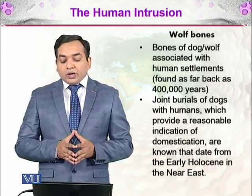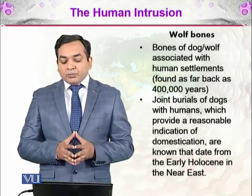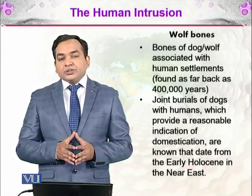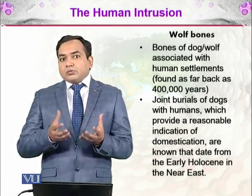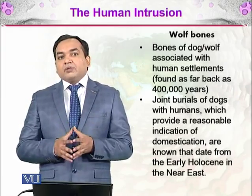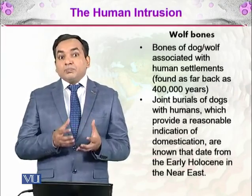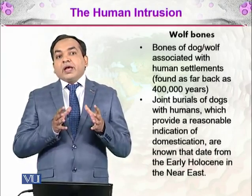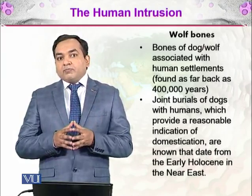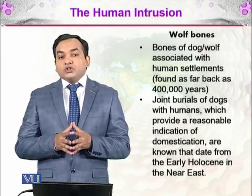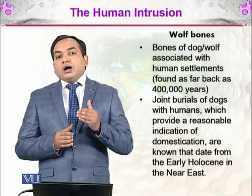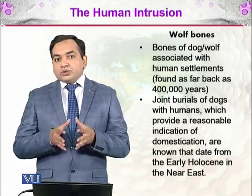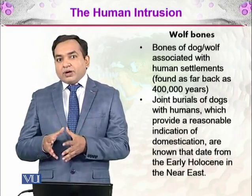Bones of dog and/or wolf associated with human settlements have been found dating back as 400,000 years. However, we should clarify whether those animals really represent examples of domestication, because humans used to eat these animals as well. If they were eating them, you would still find the bones there — but that is not an example of domestication.